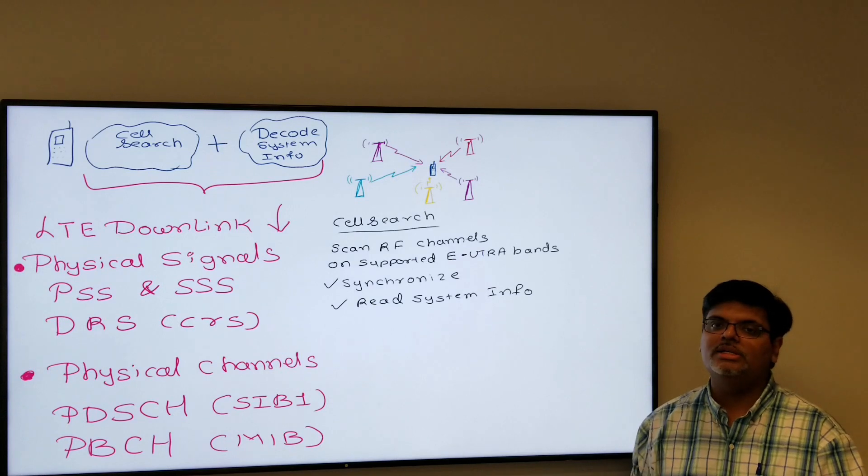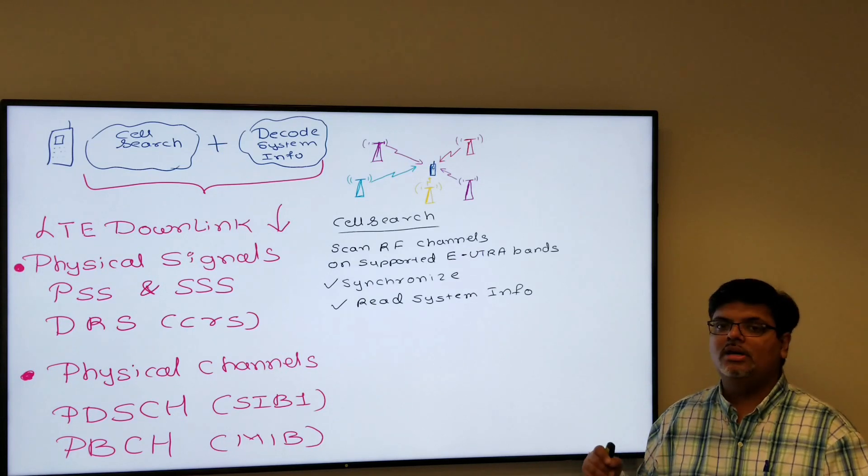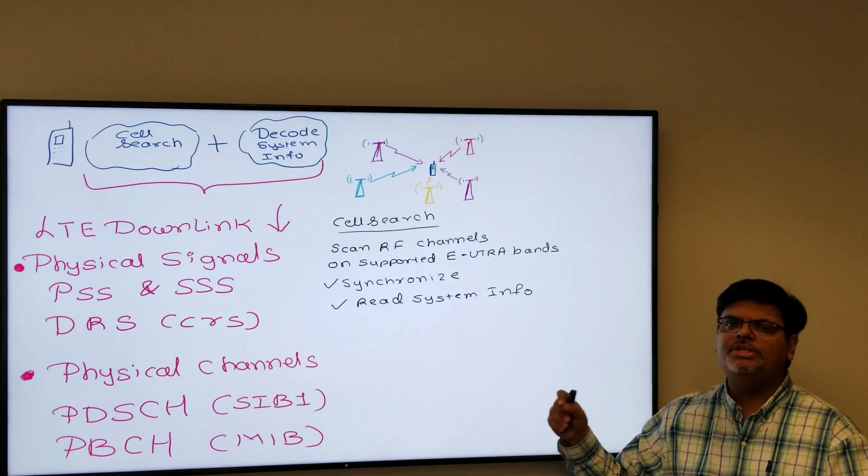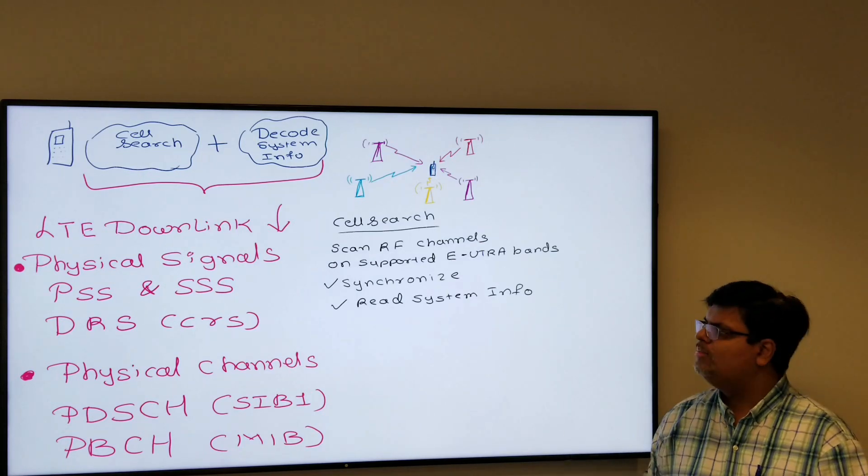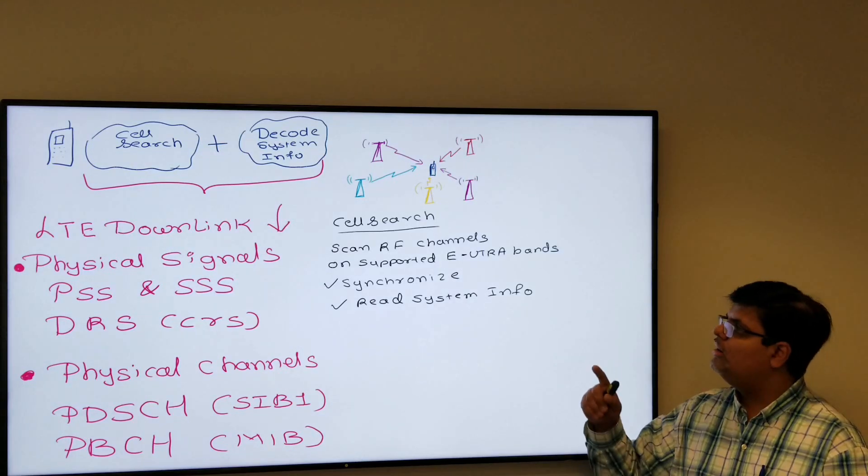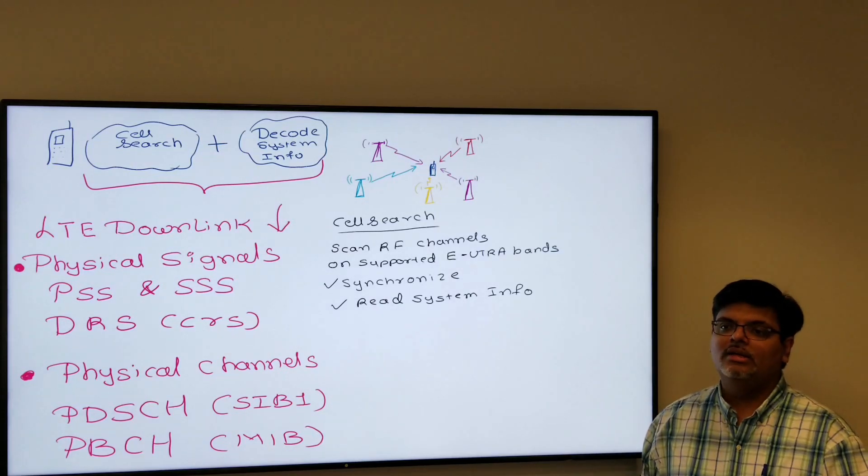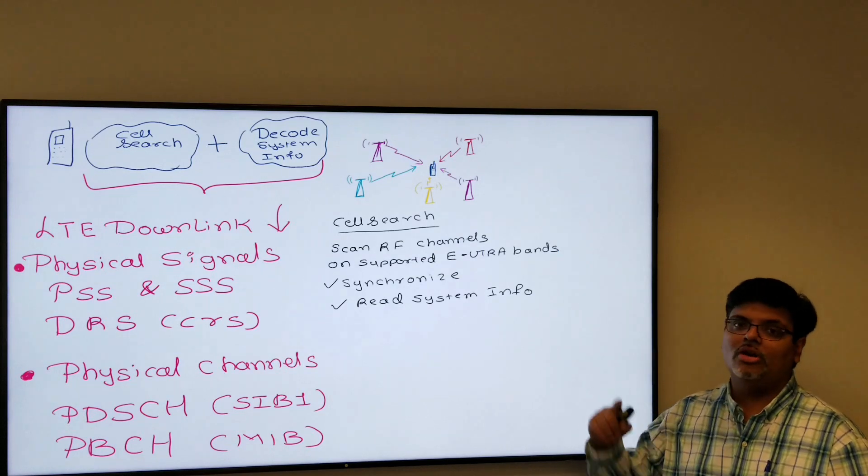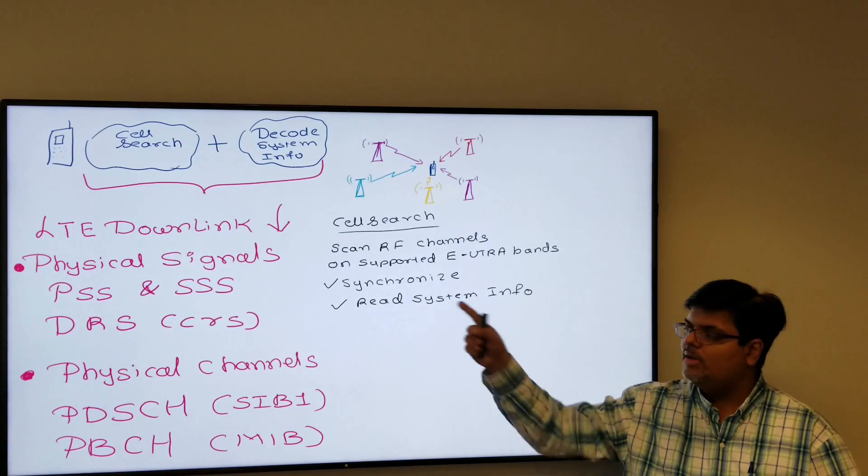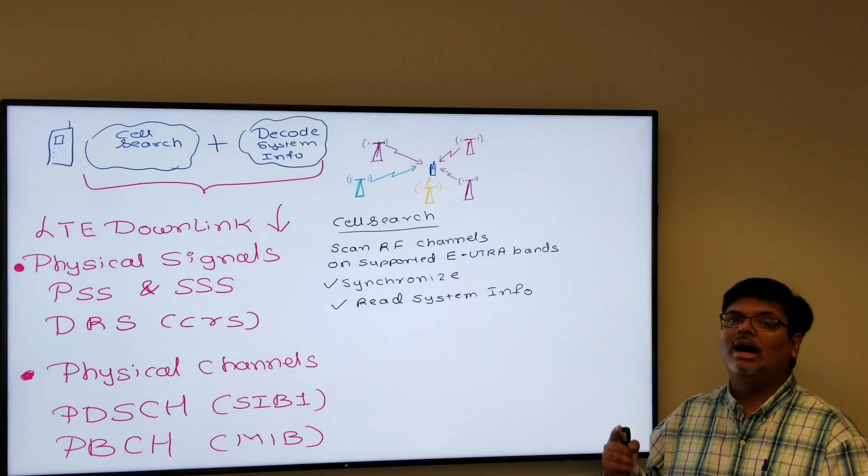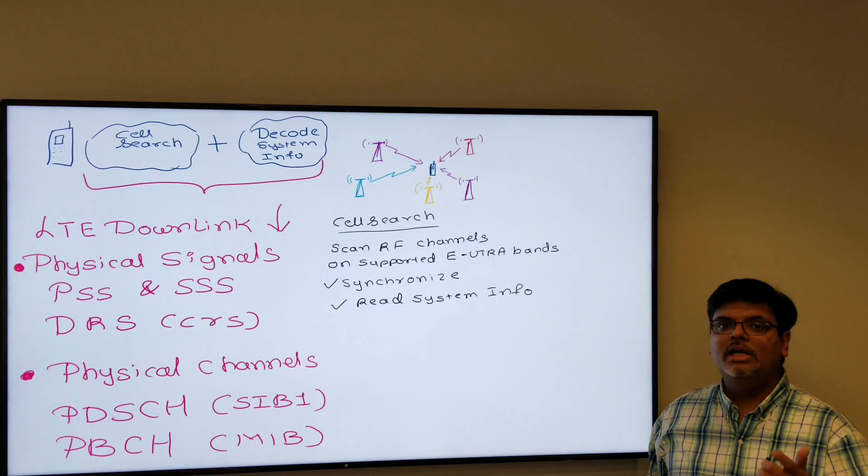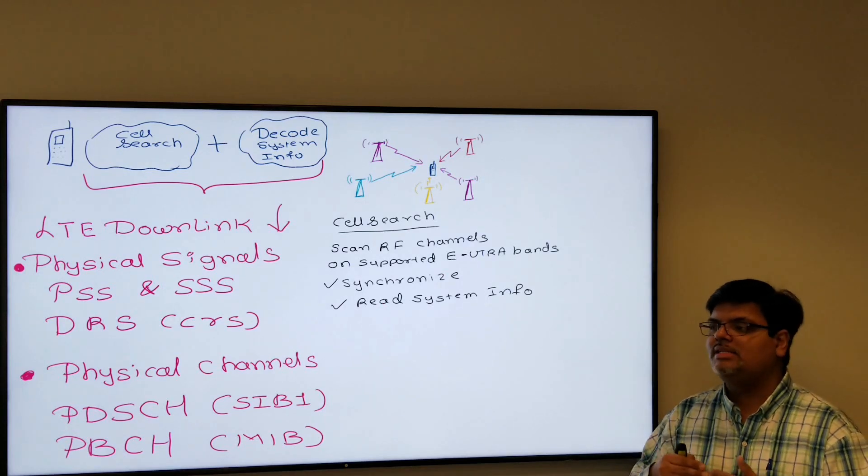It should be stronger than minus 110 dBm as per 36.304 or 204 which is UE procedures in the idle mode. Once it scans all those channels, stronger ones, then it will select the strongest amongst the strongest cells amongst the network, and then it will synchronize. It will read the PSS, SSS, after that it will go and read the MIB and SIB. From SIB it will find out the PLMN and it will match the PLMN, and then it will decide all these networks belong to me and this is a suitable cell.